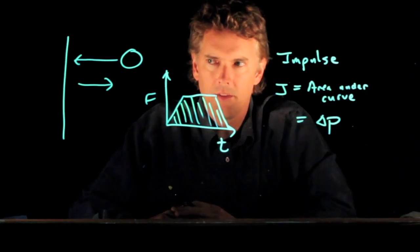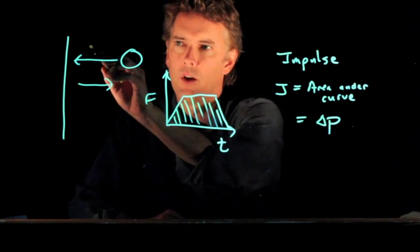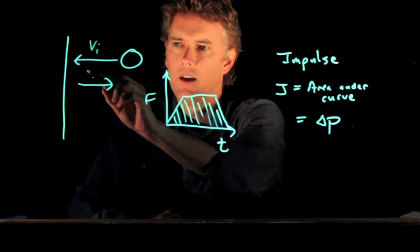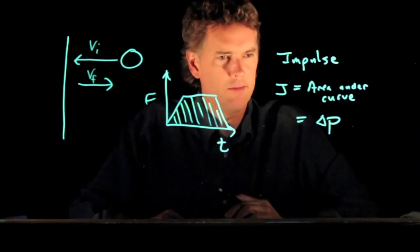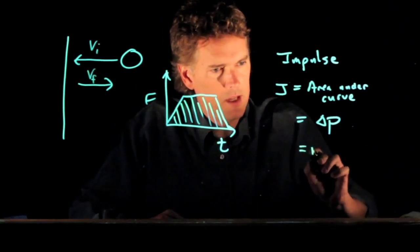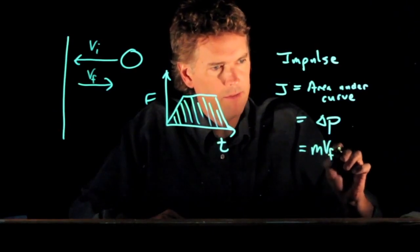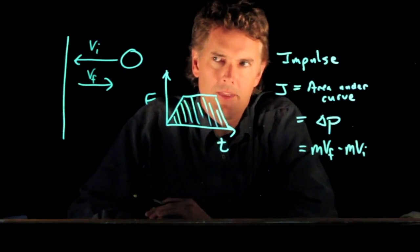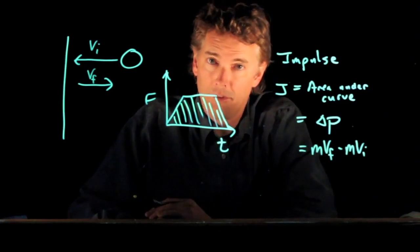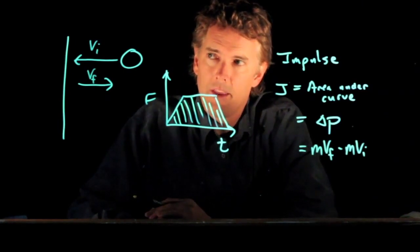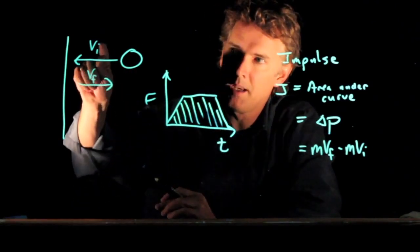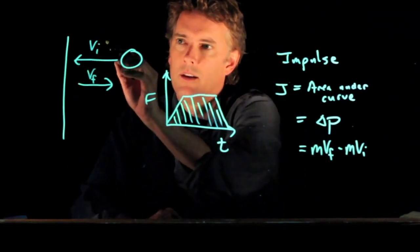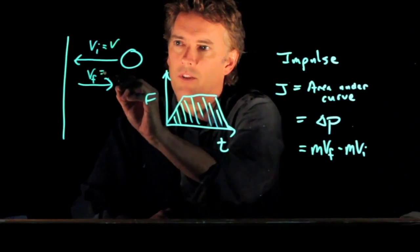And in this case, if it goes in with V_i, comes out with V_f, then delta P is mV_f minus mV_i. And in the case of something like a super ball, let's say that it goes in with speed V and comes out with speed V.